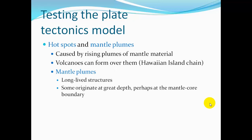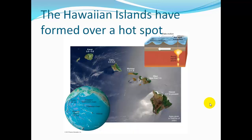Hot spots and mantle plumes are caused by rising plumes of mantle material. Volcanoes can form over these hot spots — a prime example is the Hawaiian Island chain. Mantle plumes are long-lived structures, some originating at great depth, perhaps at the mantle-core boundary. Here's an example of a hot spot where the ocean plate is passing over it and the Hawaiian Islands slowly form.